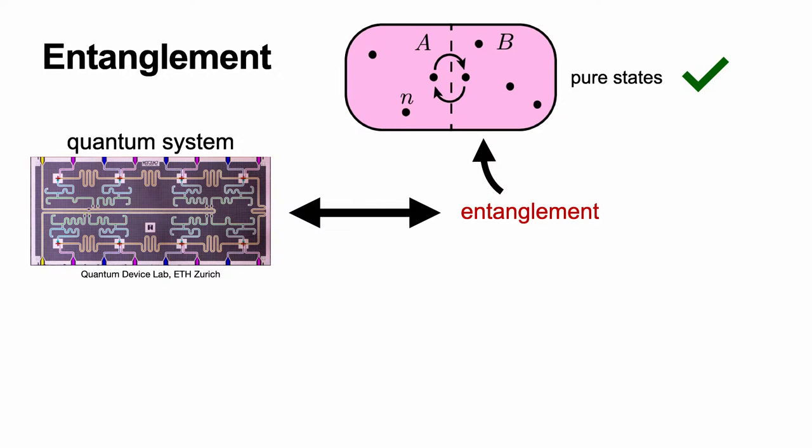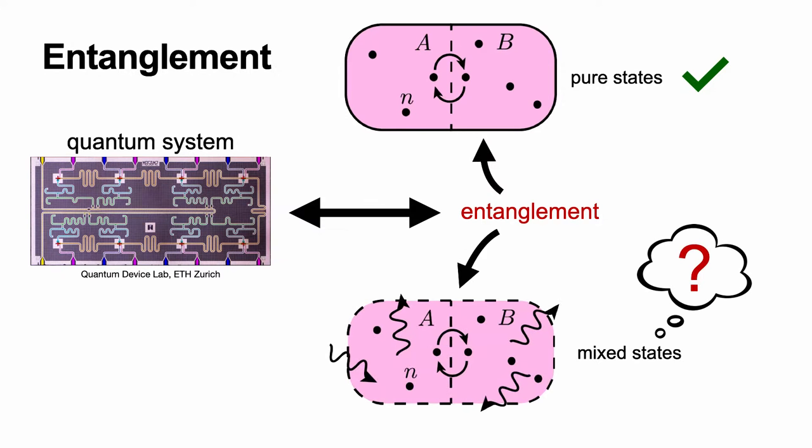Unfortunately, quantum systems usually interact with an environment — we cannot isolate them perfectly — so we usually find them in a mixed state. For mixed states, bipartite entanglement between two subsystems turns out to be much less understood and much harder to measure.